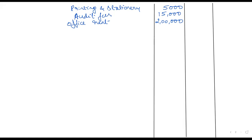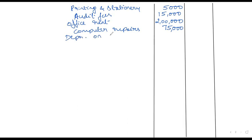Computer repairs: 75,000. We are also having two depreciations here — depreciation on furniture and depreciation on building. Furniture depreciation is 30,000 and building depreciation is 40,000.